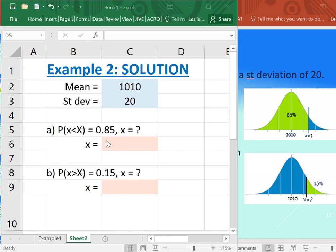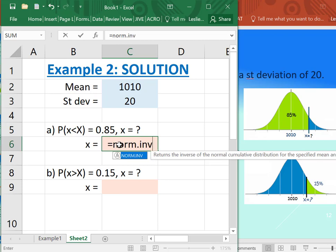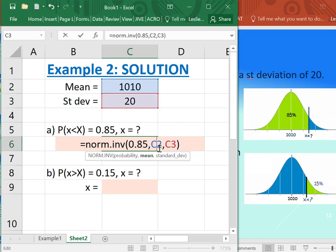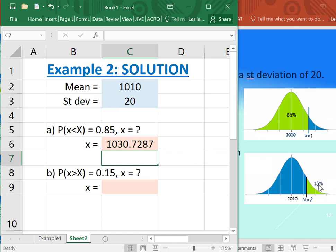So here we are. If we want the x value such that the area to the left is 0.85, we just plug in equals NORM.INV. Put in the 0.85 for our probability or area. Grab the 1010. Grab the 20. You do not need a comma 1 there, and if you want, you can lock these two references.